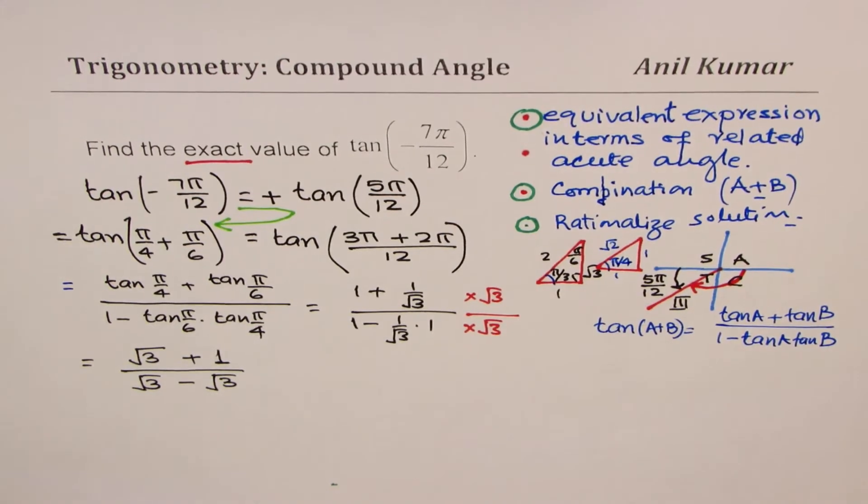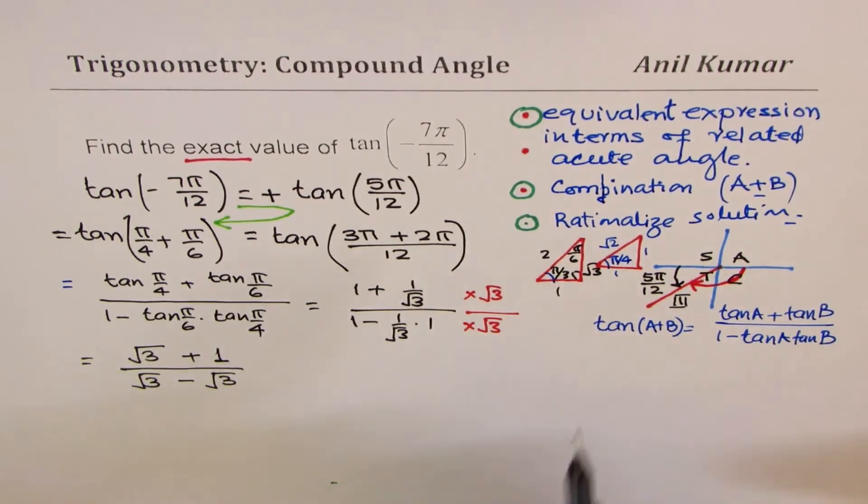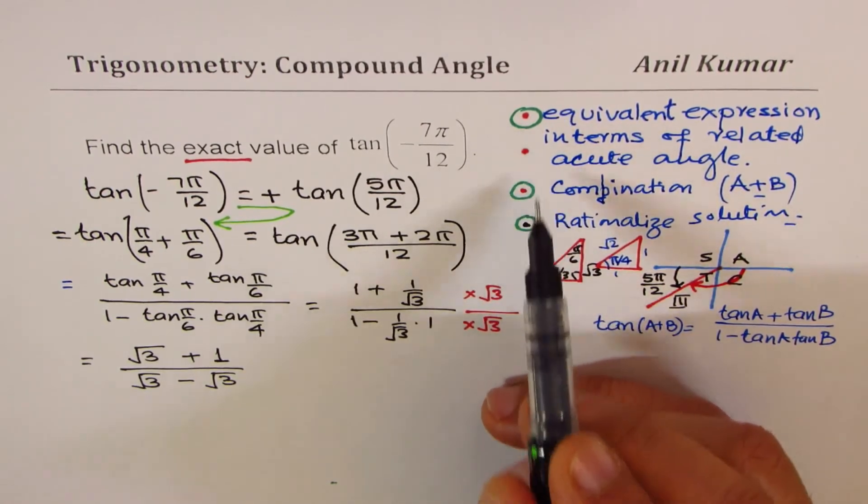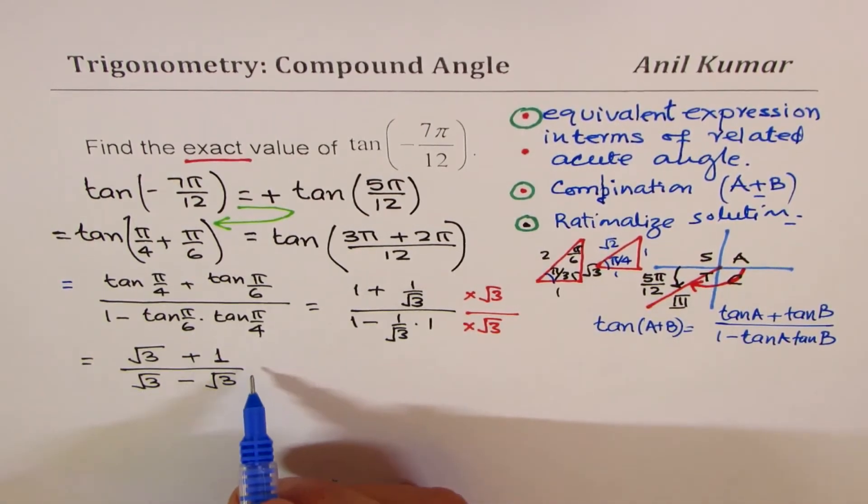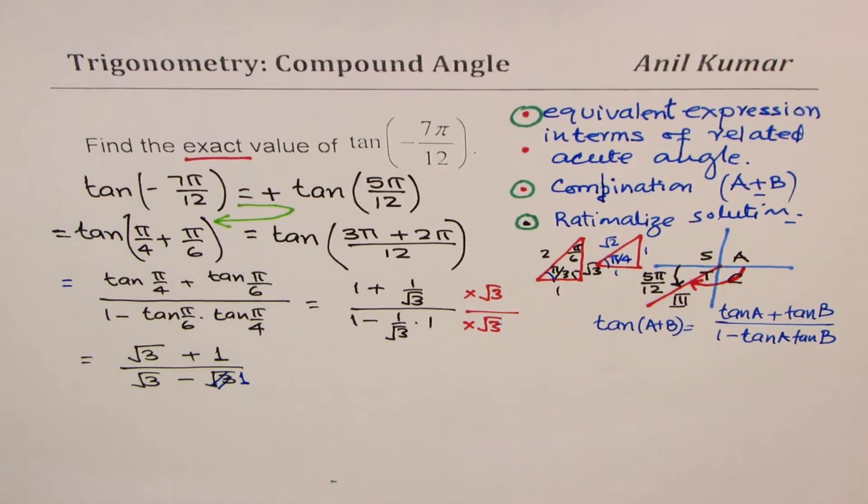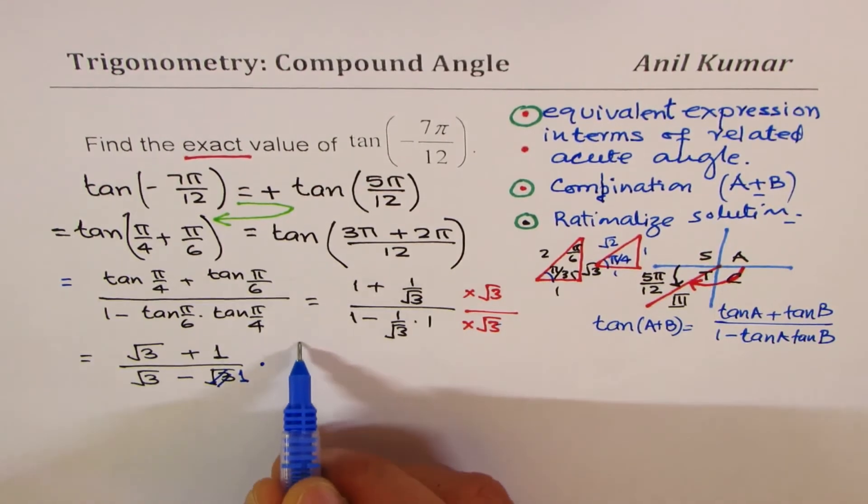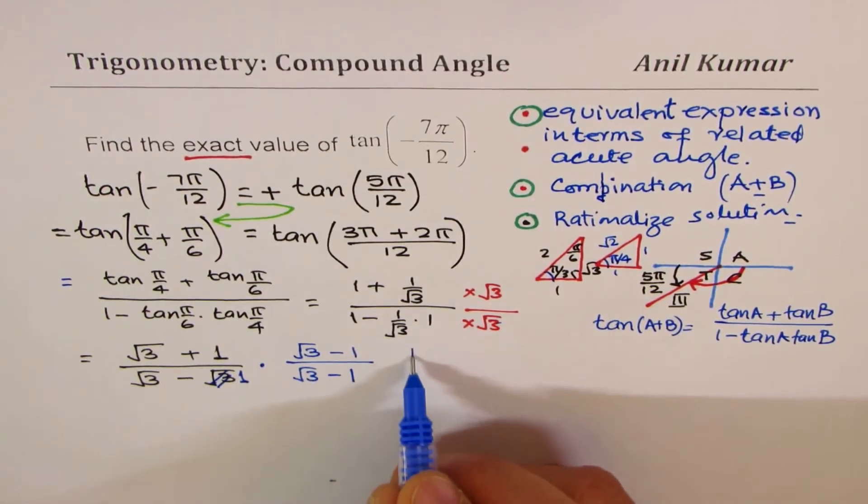Now sometimes in multiple choice, that may not be a choice, so you may have to move forward. And that is where the last step of rationalization comes in. So you see how these three steps help us. Rationalizing really means—I did something wrong here. When you multiply here you get 1, so √3 minus 1 in the denominator.